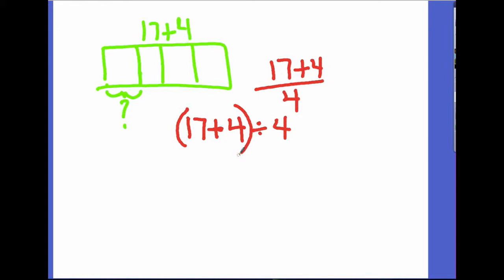When you look at that problem, what's the first thing you want to do in that problem? Add. Add the two numbers, right? So when you're doing order of operations, what comes first? Parentheses. So anything in parentheses happens first. So you could do it this way, or you could do it this way: 17 plus four divided by four. So when we do order of operations, we start with the parentheses. What's 17 plus four? We have 21, and you need to be writing it out just like this.